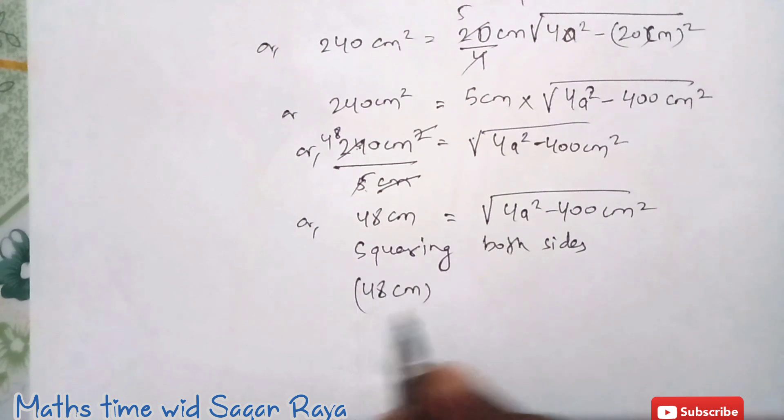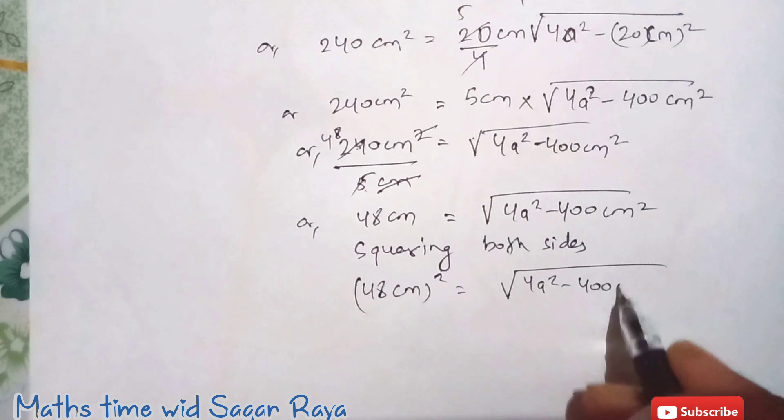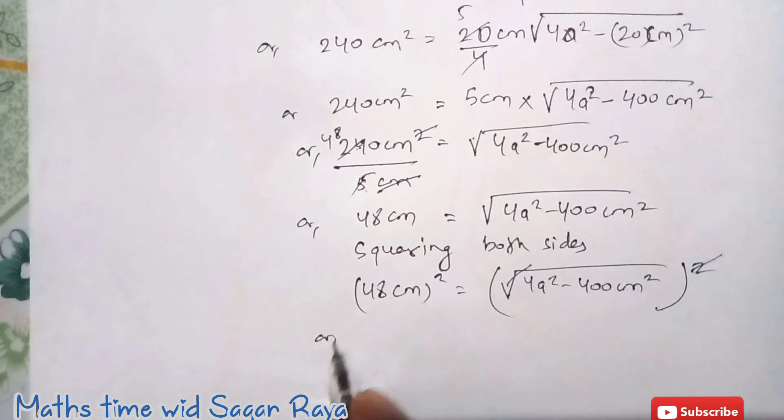So squaring both sides you have 48 cm square and here 4a square minus 400 cm square whole square. So this square and this root can be cancelled. If you just find the square of 48 you will get 2304 cm square.